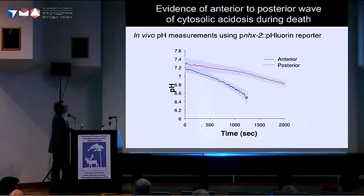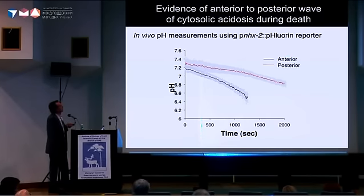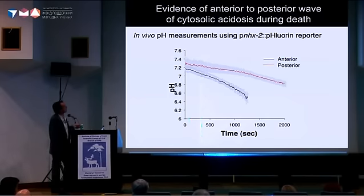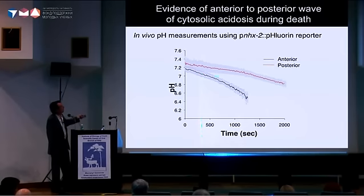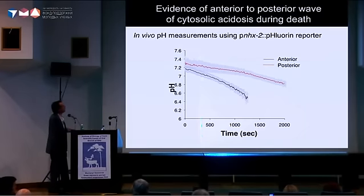Eric and Keith also looked at the level of pH within the cytosol of the worm, again looking at the anterior end and the posterior. After killing the worm, initially you have a much sharper acidification of the cytosol in the anterior of the worm, and then later in the posterior — consistent with a wave of acidification.